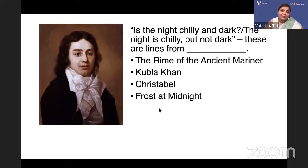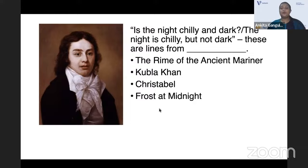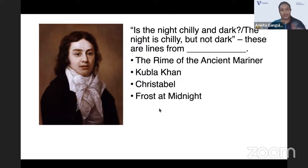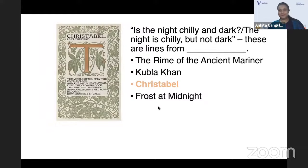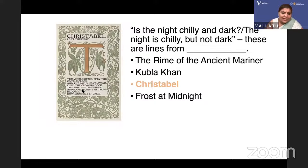'Is the night chilly and dark? / The night is chilly but not dark' — these lines are from which poem: 'The Rime of the Ancient Mariner', 'Kubla Khan', 'Christabel', or 'Frost at Midnight'? The gothic tone helps narrow it down. 'Christabel' is an incomplete gothic ballad set at night when a lady goes out to pray and meets a witch. The poem begins: 'It is the middle of night by the castle clock, and the owls have awakened the crowing cock.'